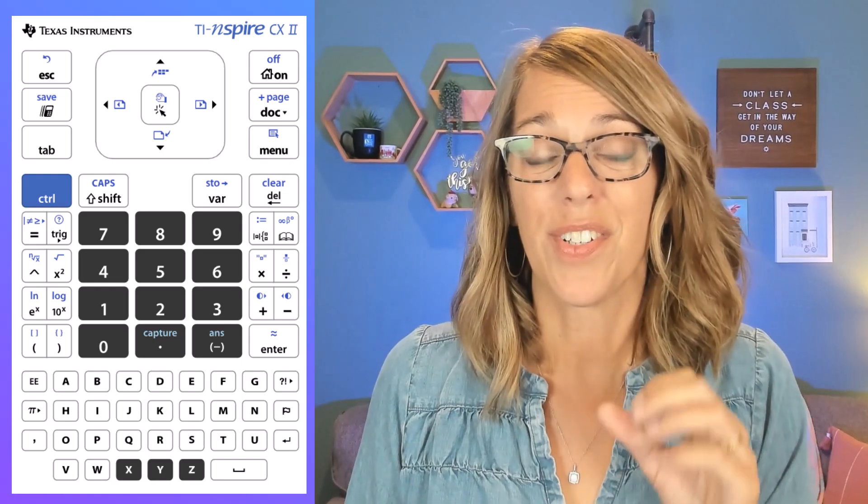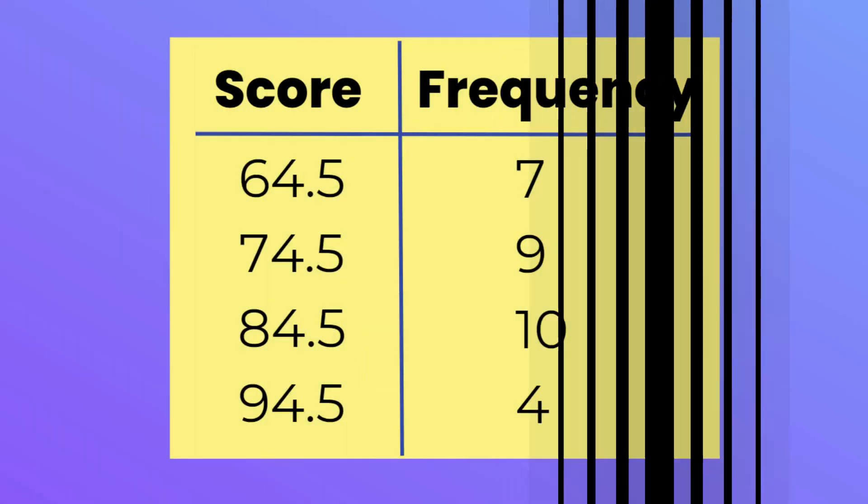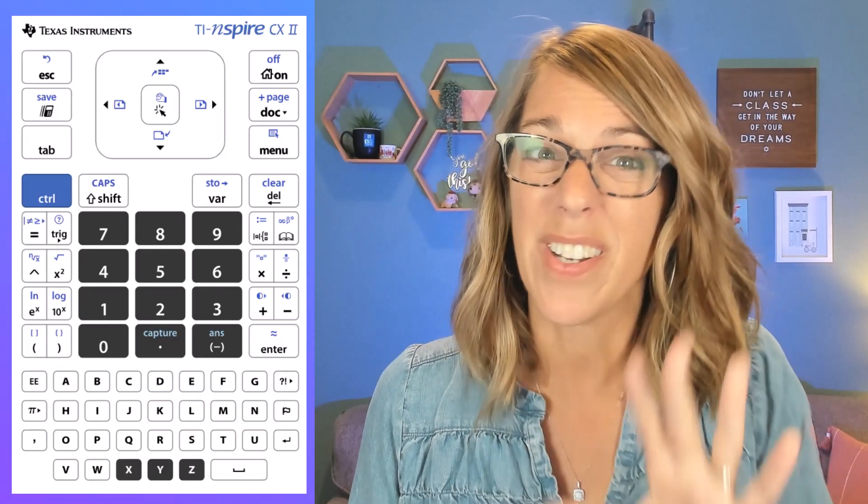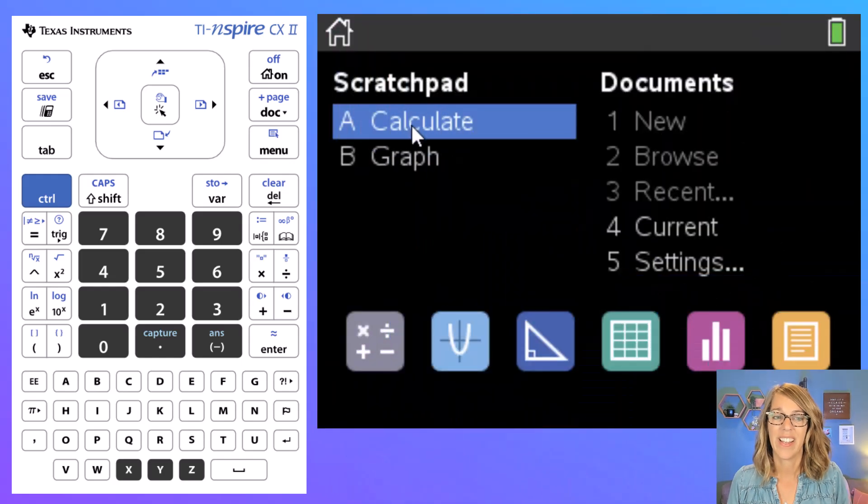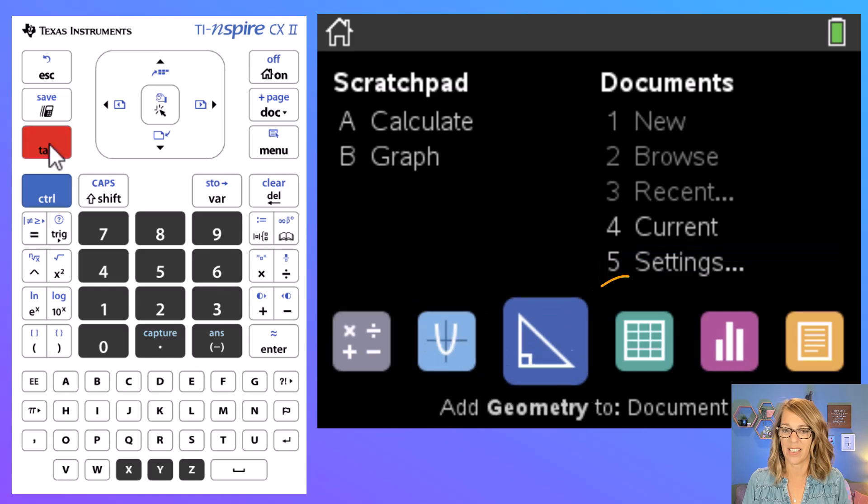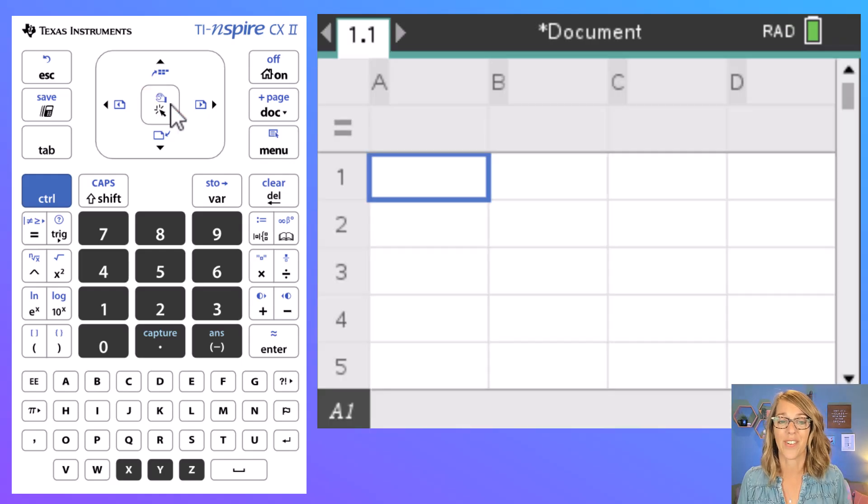To find statistical measures from frequency tables like this one or like this one, you want to start by going to your lists and spreadsheet app. You can also get here by adding a document. I'm at the home page so I'm going to tab down until I get to that lists and spreadsheet app and then click on enter. You can click the center button of your touchpad.